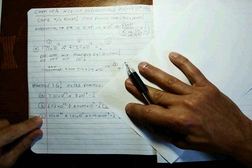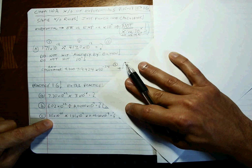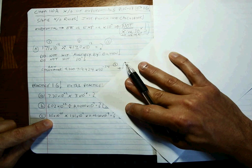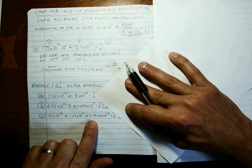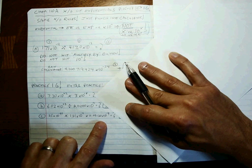And then example number C: 35 times 10 to the minus 61 times 1.61 times 10 to the 11th times 0.00120 times 10 to the minus 4th is equal to what?